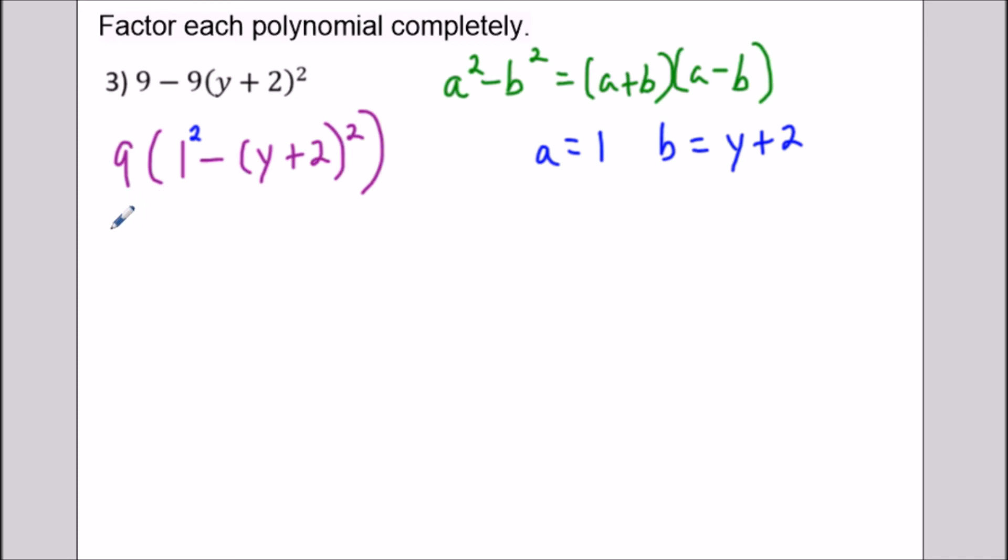So for the next line, we'll write 9. And I'll use a bracket for this. We have 9 times and then when we factor using a difference of two squares, we have a + b. So we're going to have 1 + y + 2 times. And then for the next part, we have a - b. So we're going to have 1 - (y + 2). Okay, so all we did here was use difference of two squares. But in this case, we have a = 1 and b = y + 2. So we're doing (1 + y + 2)(1 - (y + 2)).